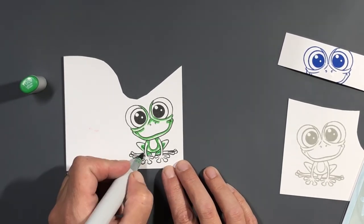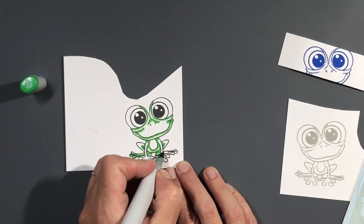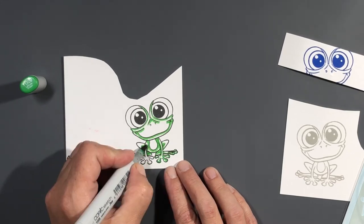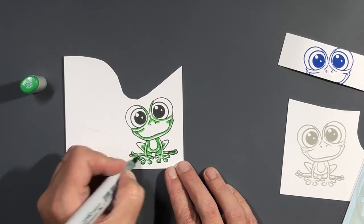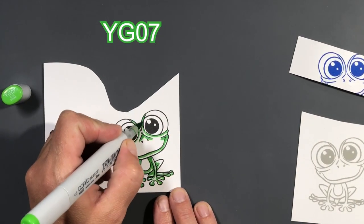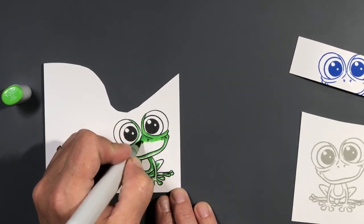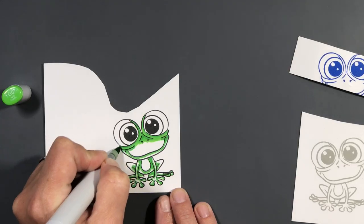He's got a cute little sentiment with him that says 'heard you got a bug,' and we're going to use that sentiment today. We're going to make a cute little shaker card. If you can see off to the side there, I stamped out two sets of eyes, one in blue and one in green.